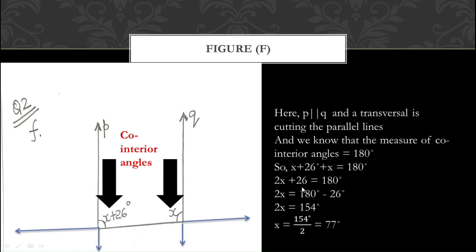In the next step, transfer 26° to the right-hand side, making it minus 26°. Subtracting: 180 − 26 = 154°. So 2X = 154°. Dividing by 2, we get X = 77°. That is how you solve part F.